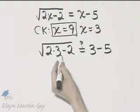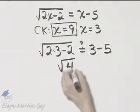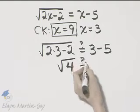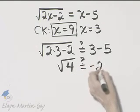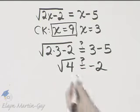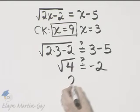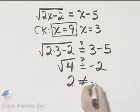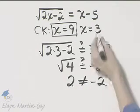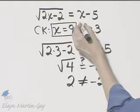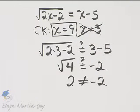Is that equal to 3 minus 5? We've got a problem here because the square root of 4 is 2. That is not equal to negative 2. So this is an extraneous solution. It is not indeed a solution of our original equation and the only solution is 9.